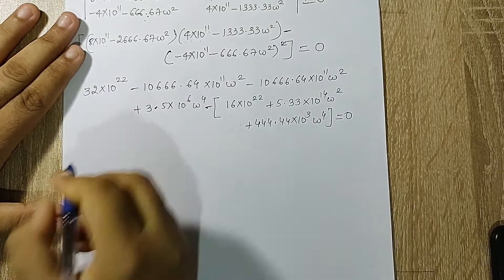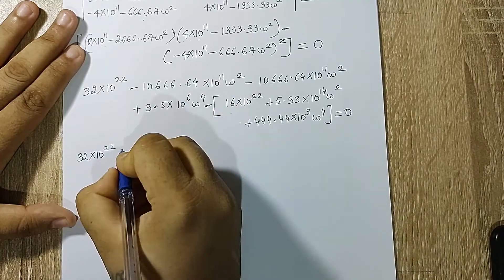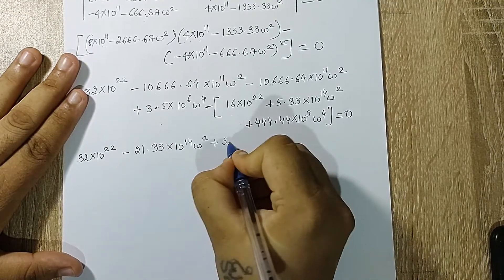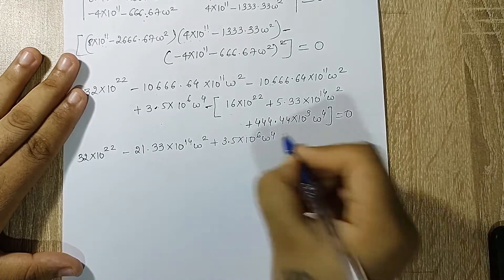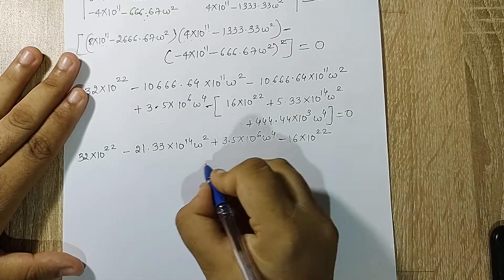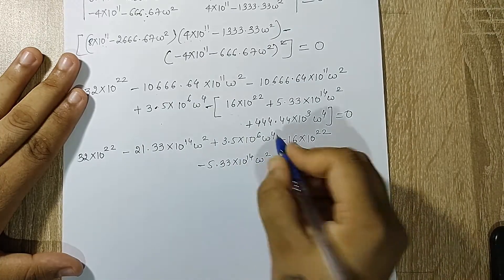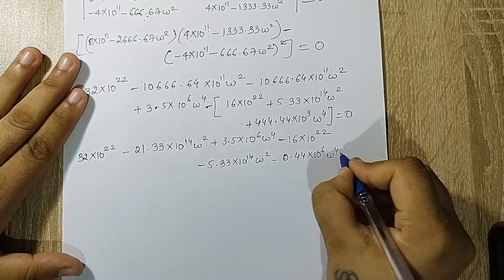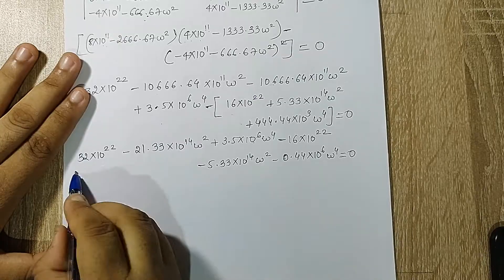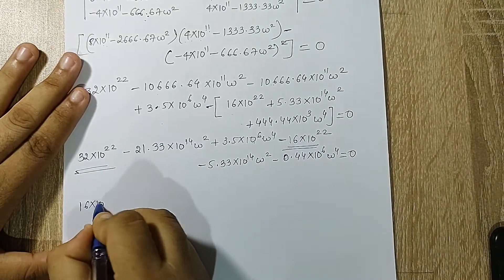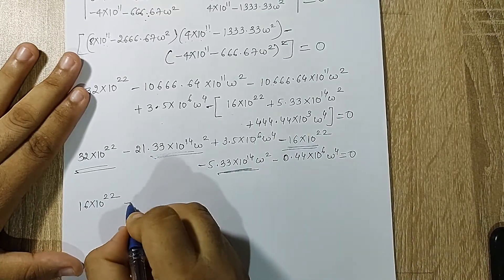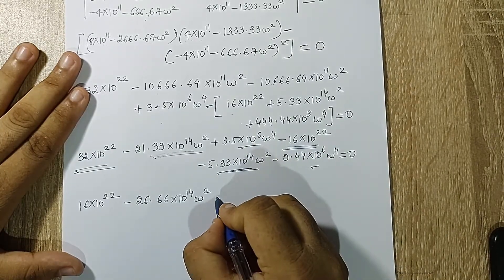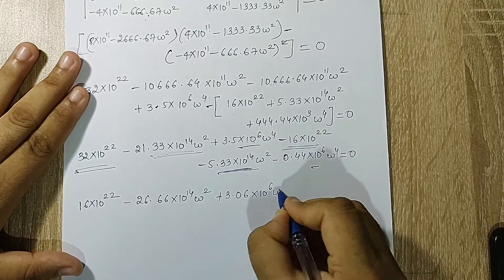Collecting and simplifying all terms: 32×10²² − 16×10²² = 16×10²²; the ω² coefficients combine to −26.66×10¹⁴·ω²; and the ω⁴ coefficients give 3.06×10⁶·ω⁴. The full equation becomes: 16×10²² − 26.66×10¹⁴·ω² + 3.06×10⁶·ω⁴ = 0.